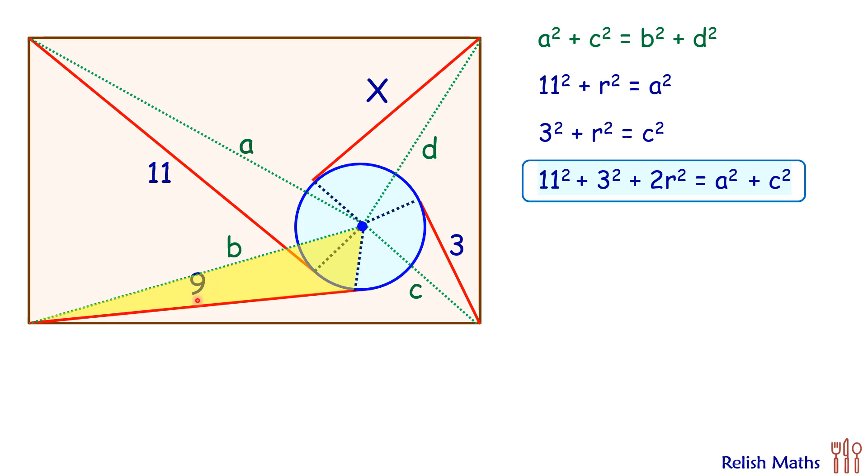And we will get a relation here is 9² + r² = b². And if we take this triangle here, so in this yellow triangle we have got d is hypotenuse, so x² + r² = d².